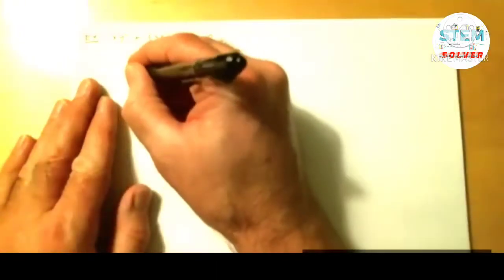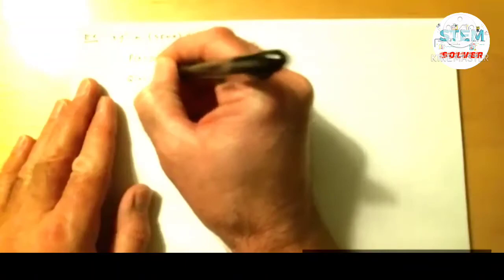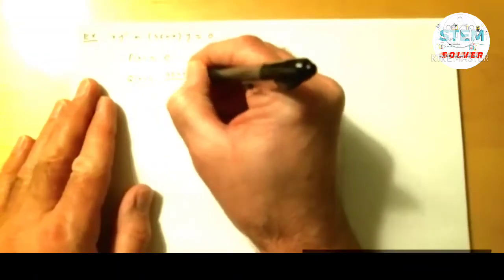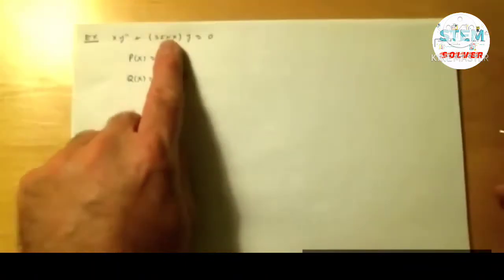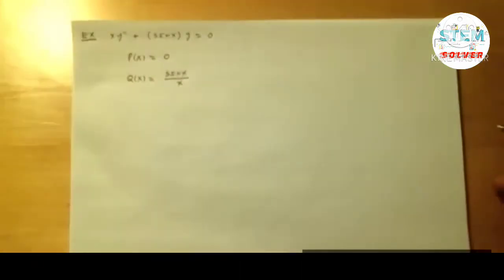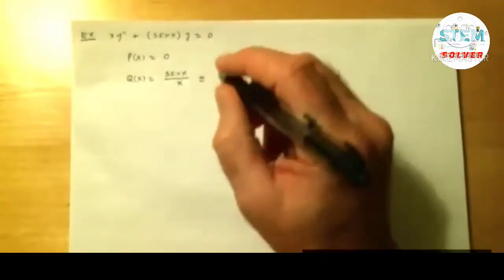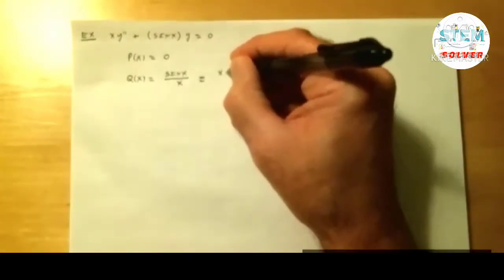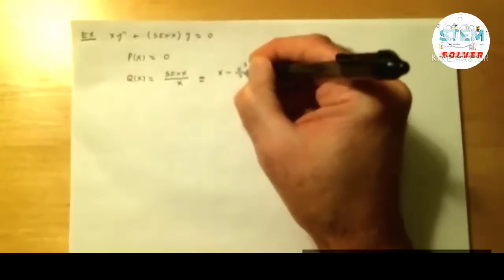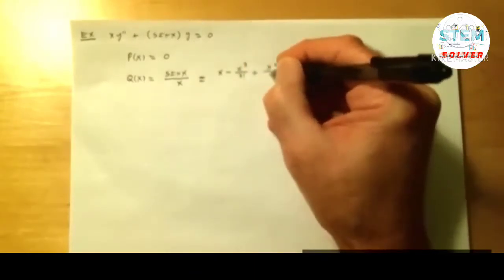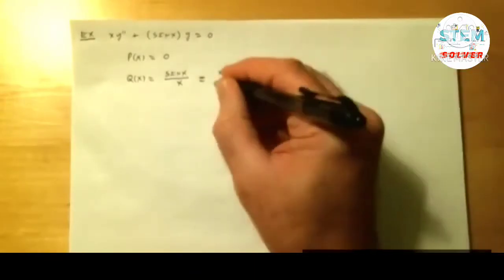Now, the q of x is going to be sine of x over x. Again, taking that coefficient on y and dividing by the lead coefficient. Now, it's not obvious that this is going to be okay. If you think about what we did, it's a power series of sine of x. Sine of x is an odd power, so it's x minus x cubed over 3 factorial plus x to the fifth over 5 factorial minus dot dot dot.